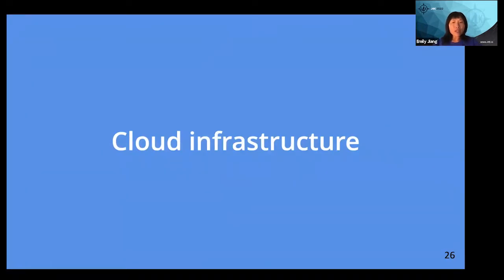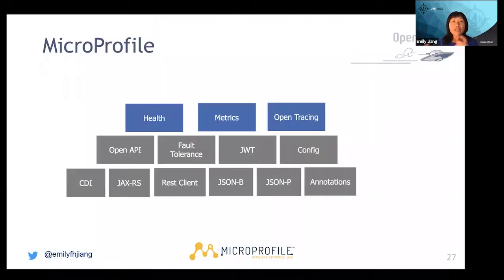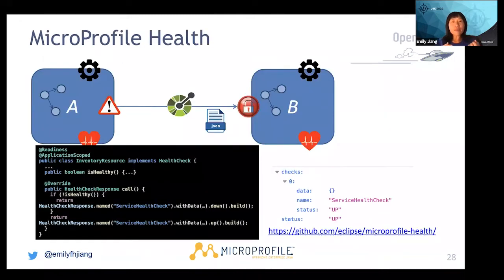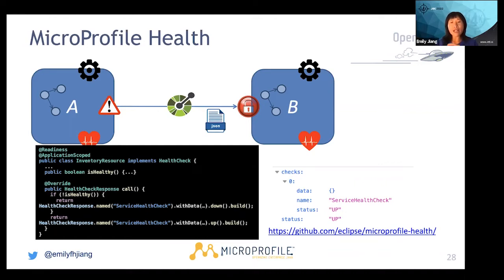With all that described, you can create cloud native applications. The next step is deploying to the cloud. If you want to deploy your cloud native application to the cloud, you need to consider health, metrics, and tracing. For health, MicroProfile Health works directly and perfectly with Kubernetes. It has three annotations — readiness, liveness, and startup — and exposes three endpoints: slash health/ready, slash health/live, and slash health/started. These work very well with Kubernetes probes.